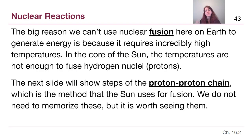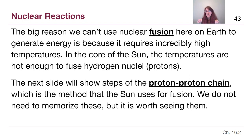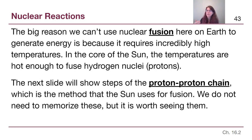The big reason we can't use nuclear fusion here on Earth is that fusion requires extremely high temperatures — over 10 million degrees Kelvin. In the core of the sun that's not a problem, with very high temperatures and very high densities that allow hydrogen nuclei — essentially just protons — to come together at high enough speeds that they stick. On Earth we have only been able to do fusion in very small amounts in a lab, requiring enormous energy input, so it is not a valid source of energy generation for us here.